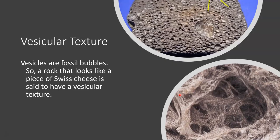The next texture is vesicular. This also comes out of a volcano — it's an extrusive igneous rock. Vesicular texture forms when a particular lava has a lot of gas in it. That gas is trapped until the lava cools and solidifies into a rock, at which point the gases escape into the atmosphere, leaving behind little vesicles or fossil bubbles that make the rock very light and not very dense at all.